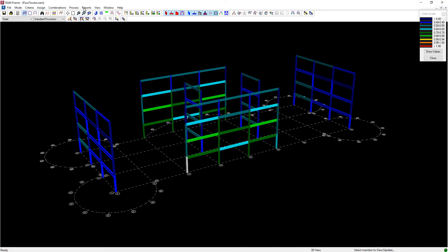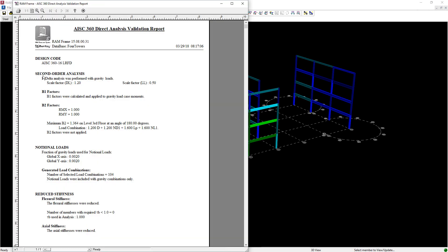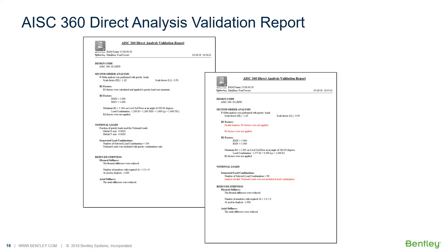A powerful and useful report is the AISC 360 direct analysis validation report. It will verify the correctness of each required step. Any omissions will be clearly identified. The status of the second order analysis, the inclusion of notional loads, and the use of reduced stiffnesses is reported. The RAM Structural System provides a comprehensive and robust set of options for satisfying the design and analysis requirements of AISC 360. The direct analysis validation report identifies when the proper set of options have been selected and warns when the necessary options are ignored or improperly applied.